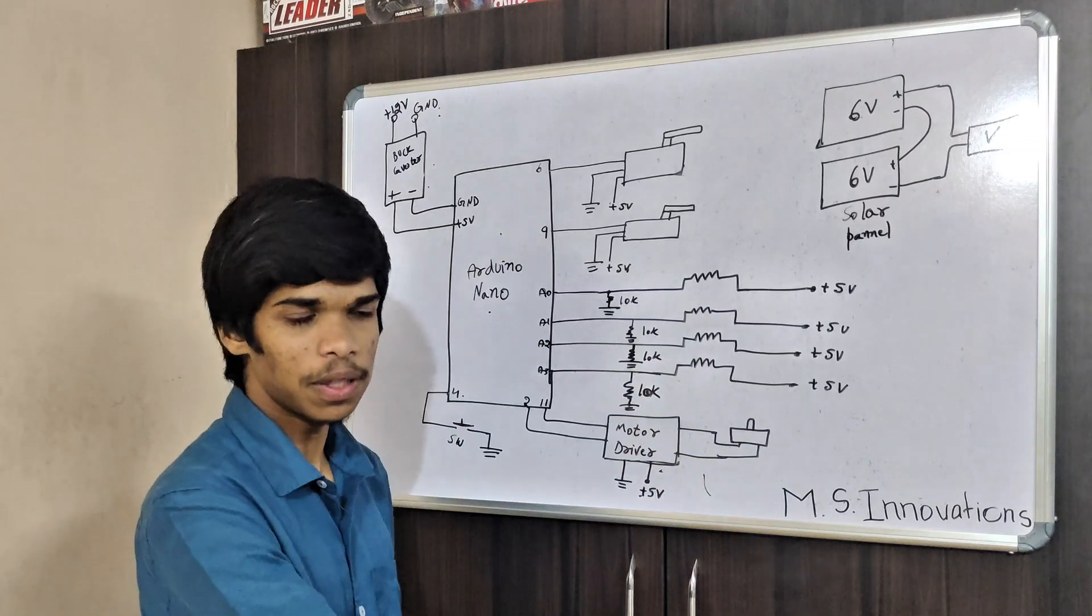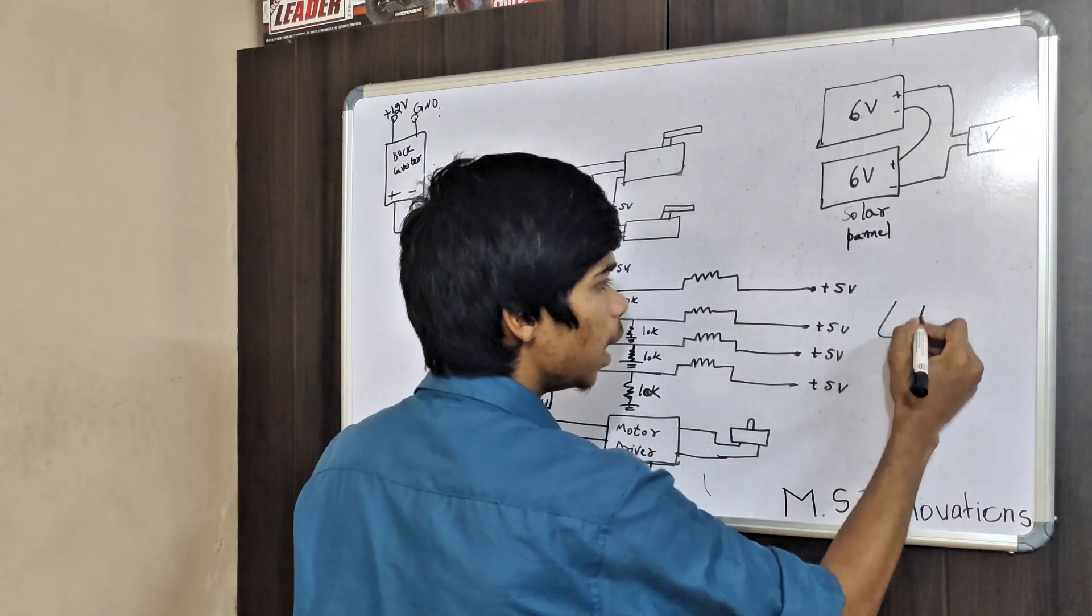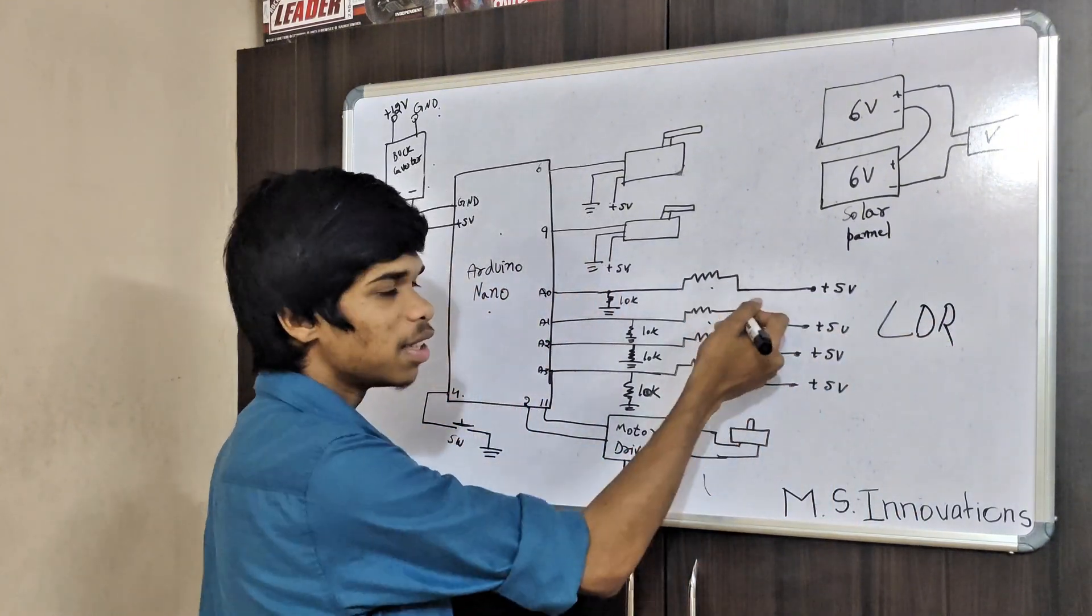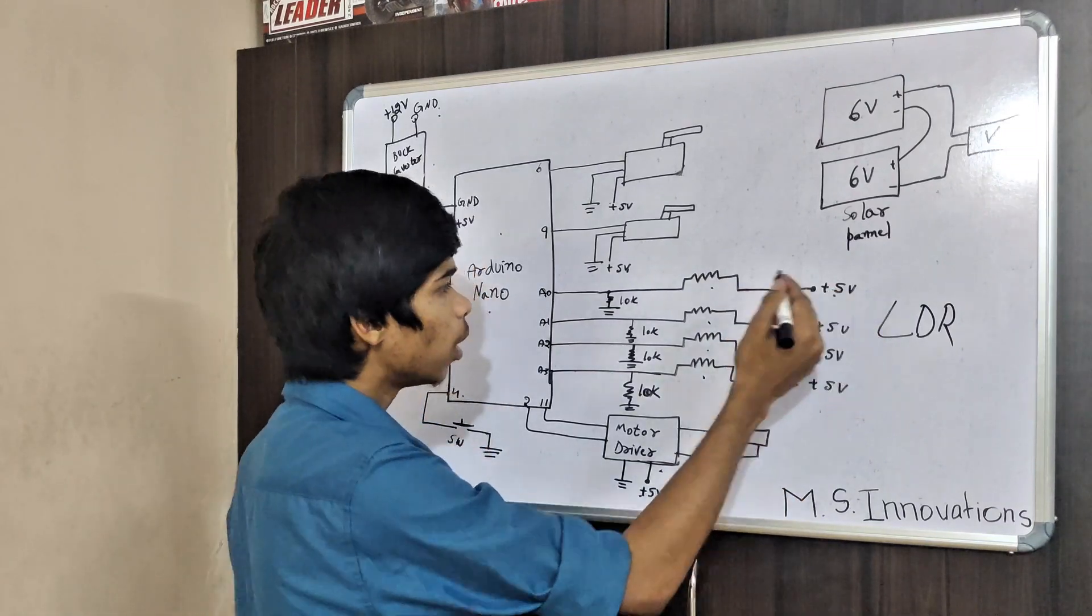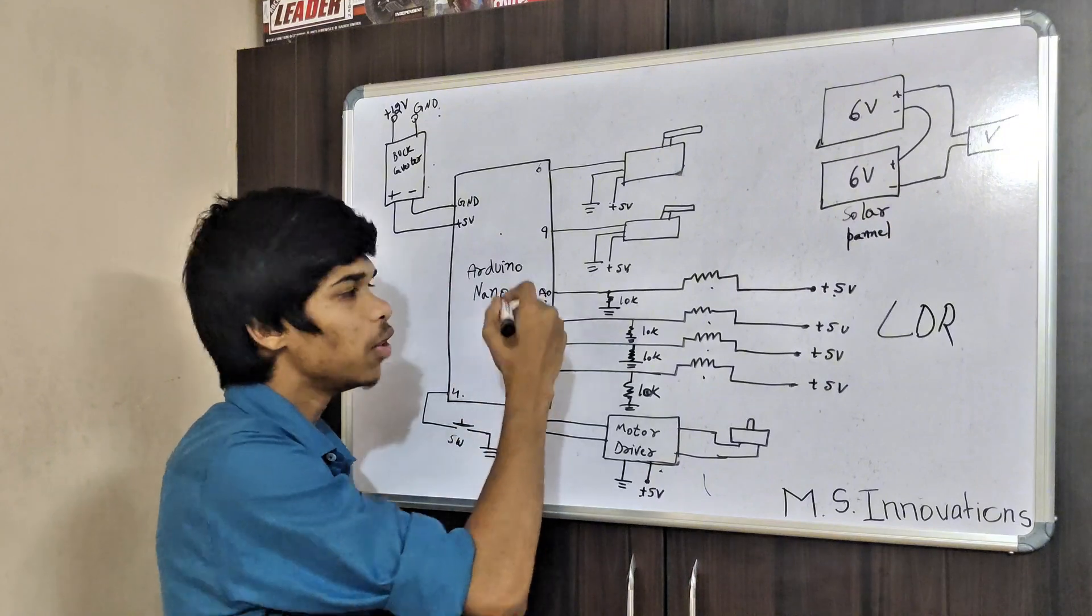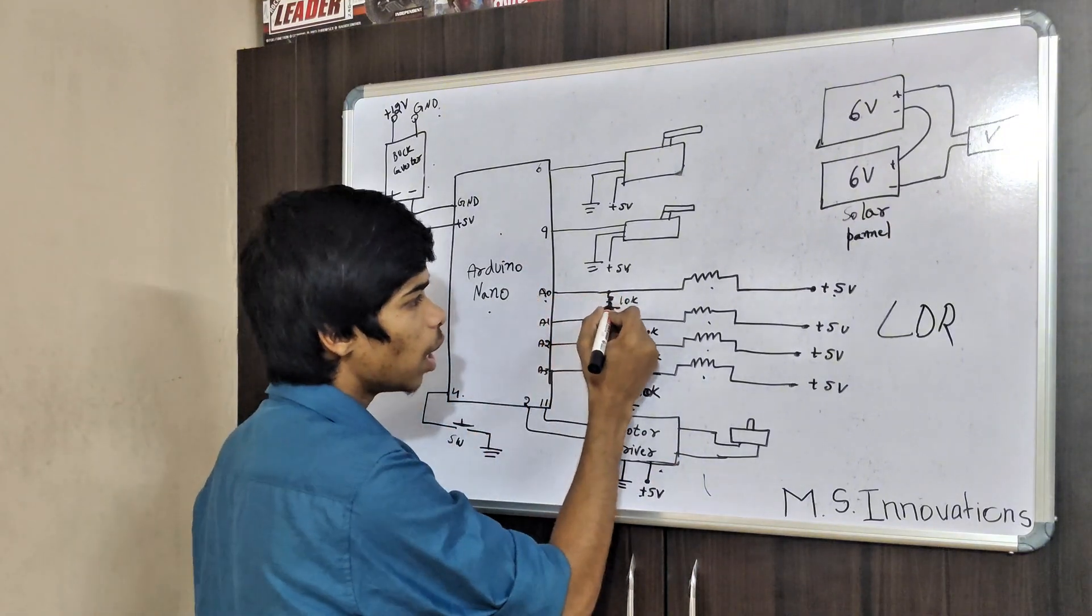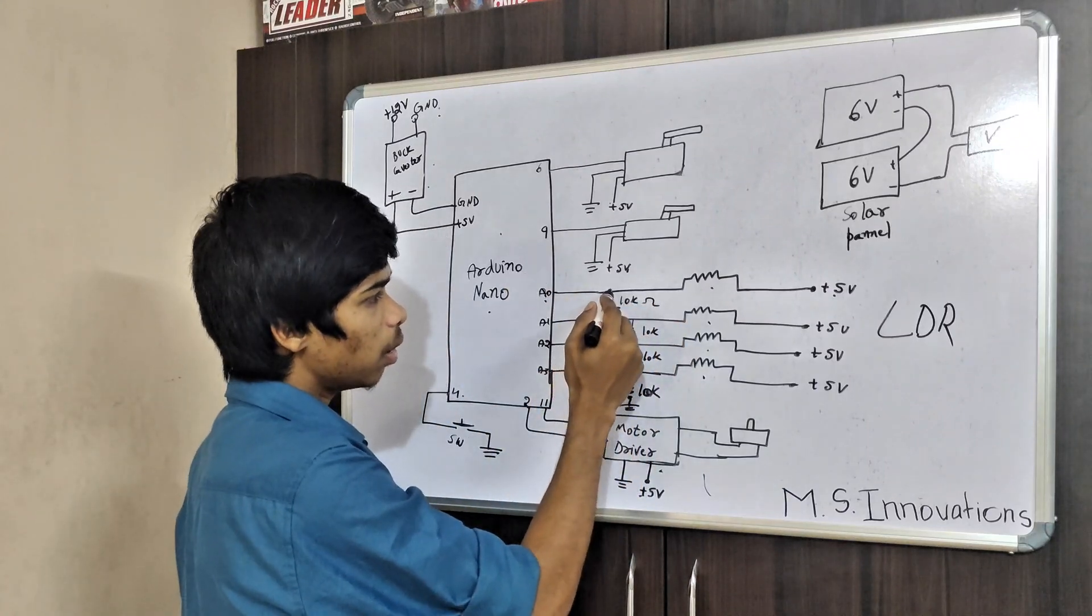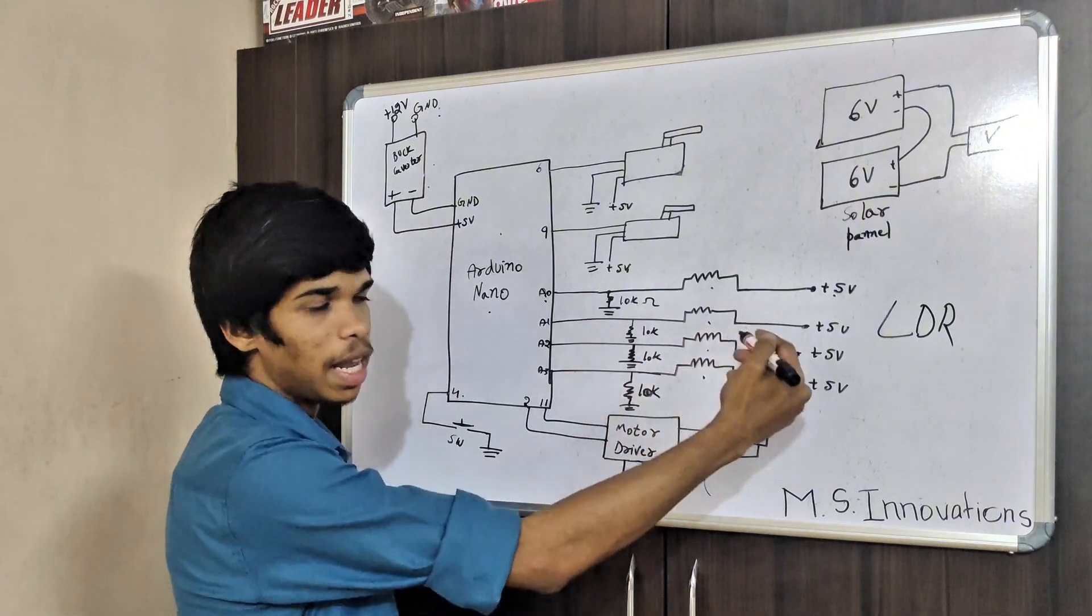It is an L293D motor specifically used here to get the rotating action. These four are LDR sensors. Since this is a resistor, I have written a resistor symbol. One side of the LDR is given to 5V, another terminal is given to A0 pin, which is an analog pin of Arduino Nano. In addition to that, we are using a 10kΩ resistor with this pin and connecting that to ground for all four LDRs.